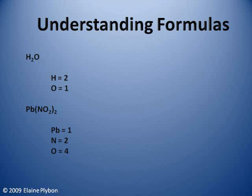There isn't a whole lot to know to be successful with molar mass and mole conversions. The first thing to be sure to understand is what chemical formulas mean. The first formula for this example is one you are quite familiar with: H2O. This formula means there are two hydrogens and one oxygen. It also means that in one mole of H2O, there are two moles of hydrogen and one mole of oxygen.